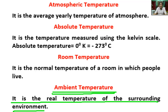Ambient temperature is usually the temperature of the air surrounding the equipment, such as a computer or a power supply unit.